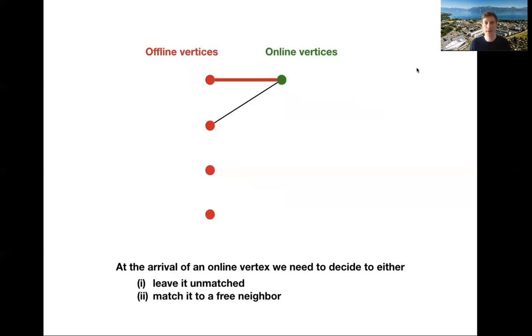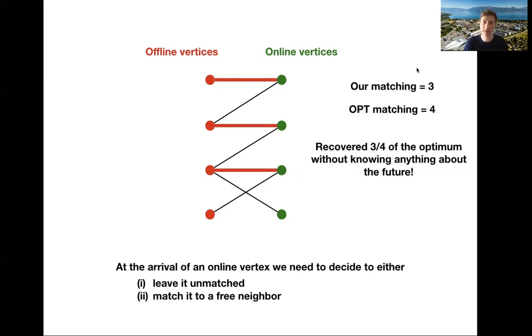Maybe here we match it to the top one. Then a new guy arrives, we match it to the top one. New guy arrives, we match it to the top one. And there comes another one. Now we cannot match this guy because his neighbor is already taken. And if you think about it, it would have been better to match this guy down here, because then we could also match this guy up here. But we cannot change our solution. So in this case, our algorithm recovered a matching of size 3, whereas the optimal matching had size 4. In other words, we recovered 3 fourths of the optimal matching.